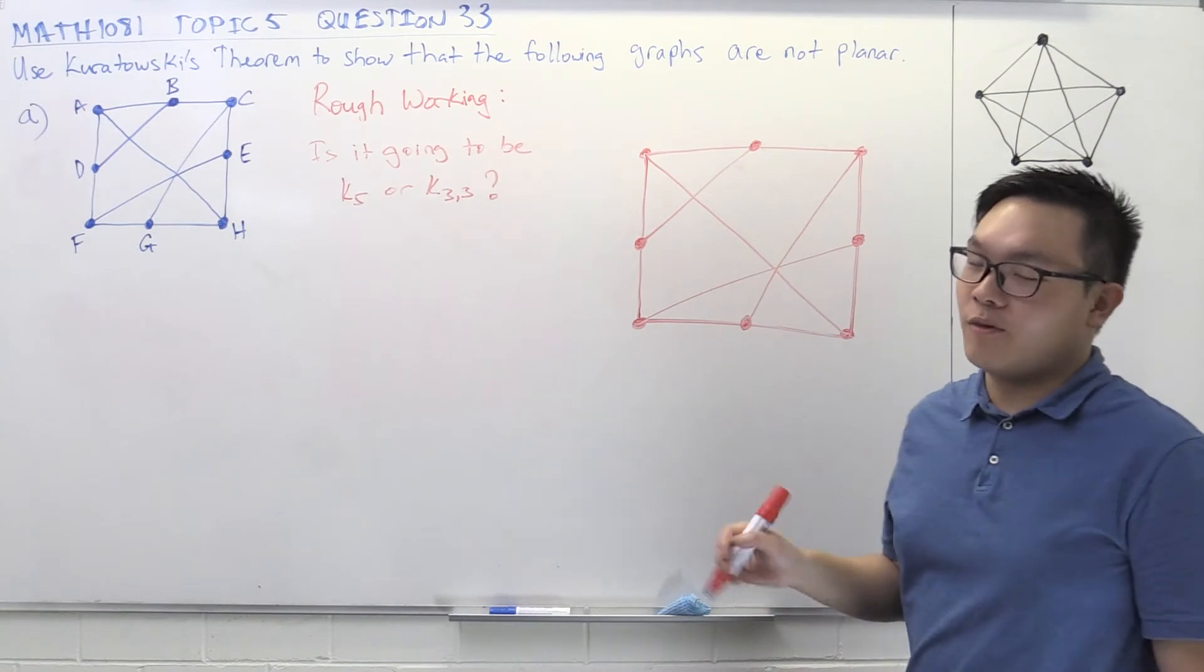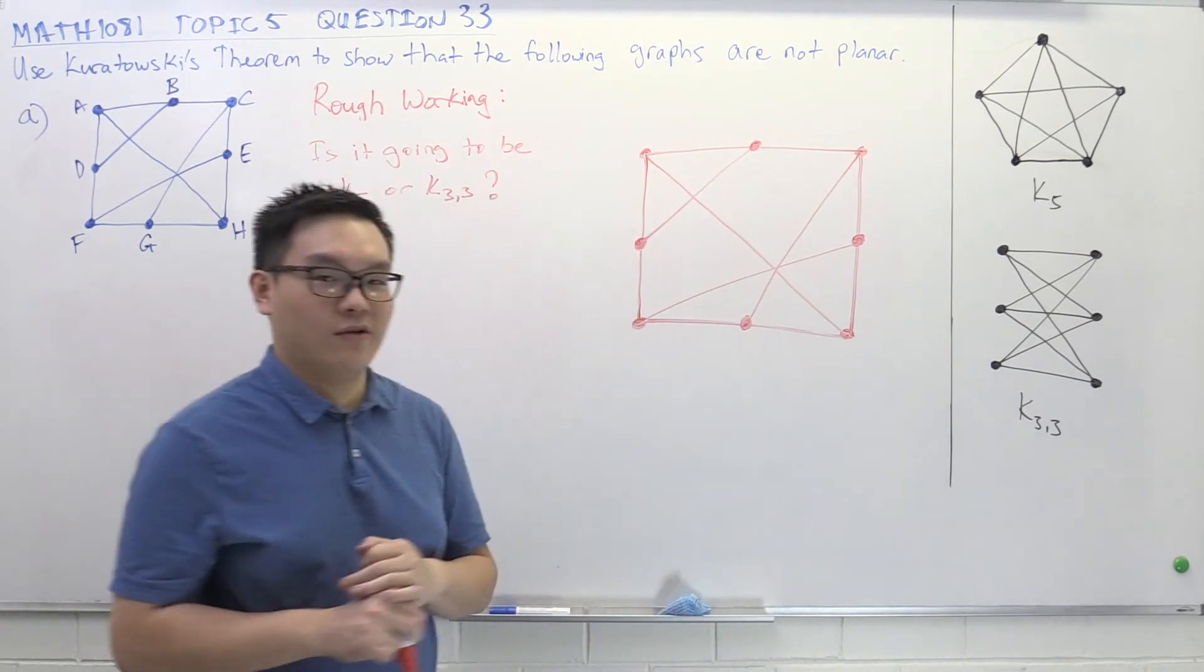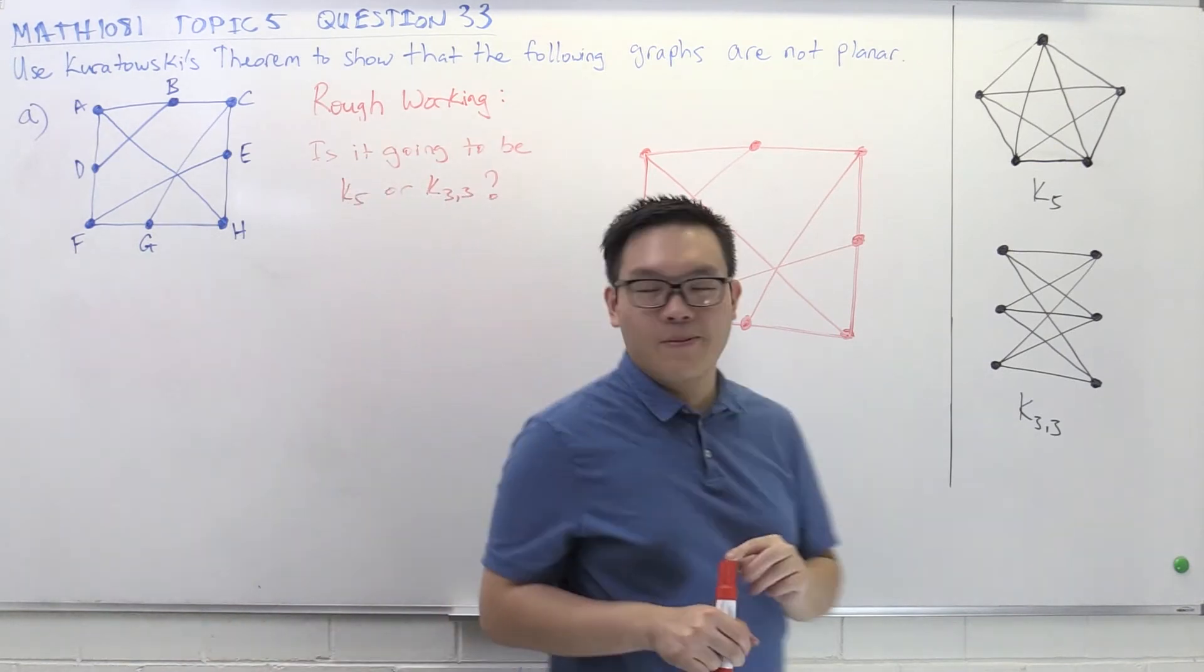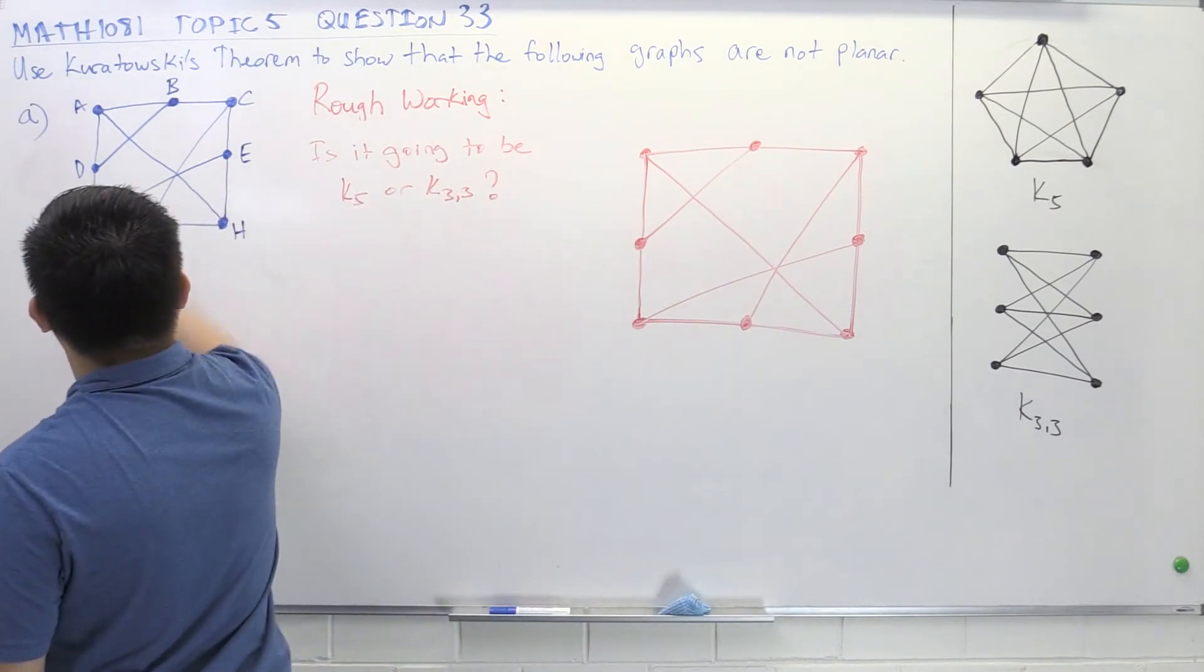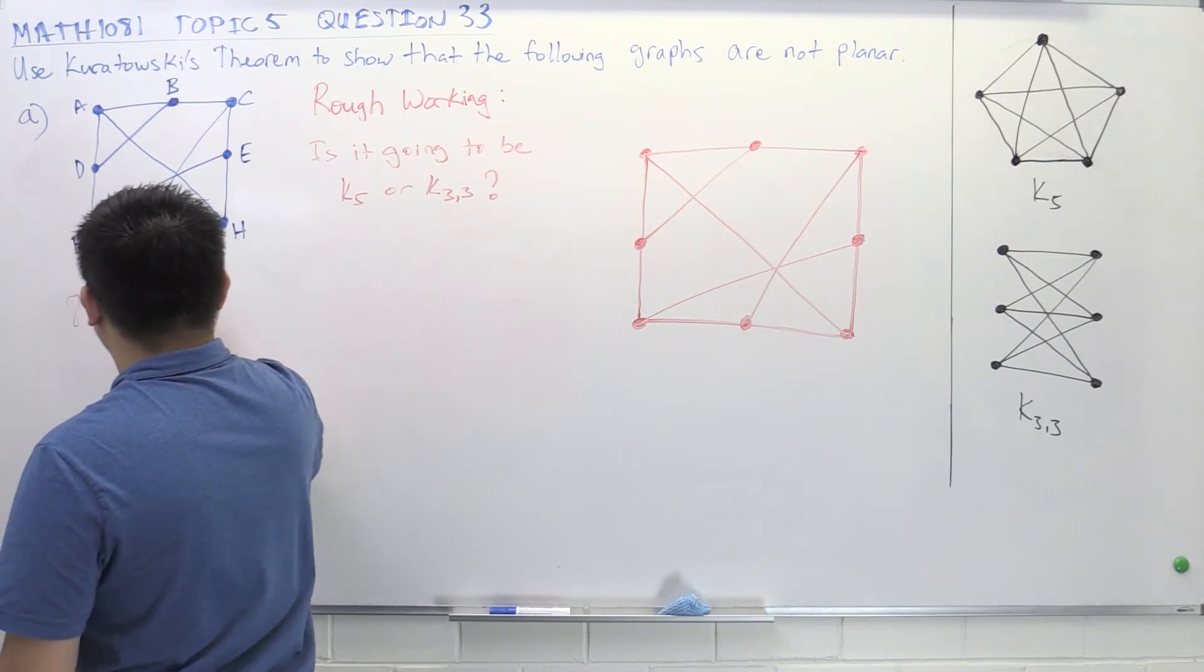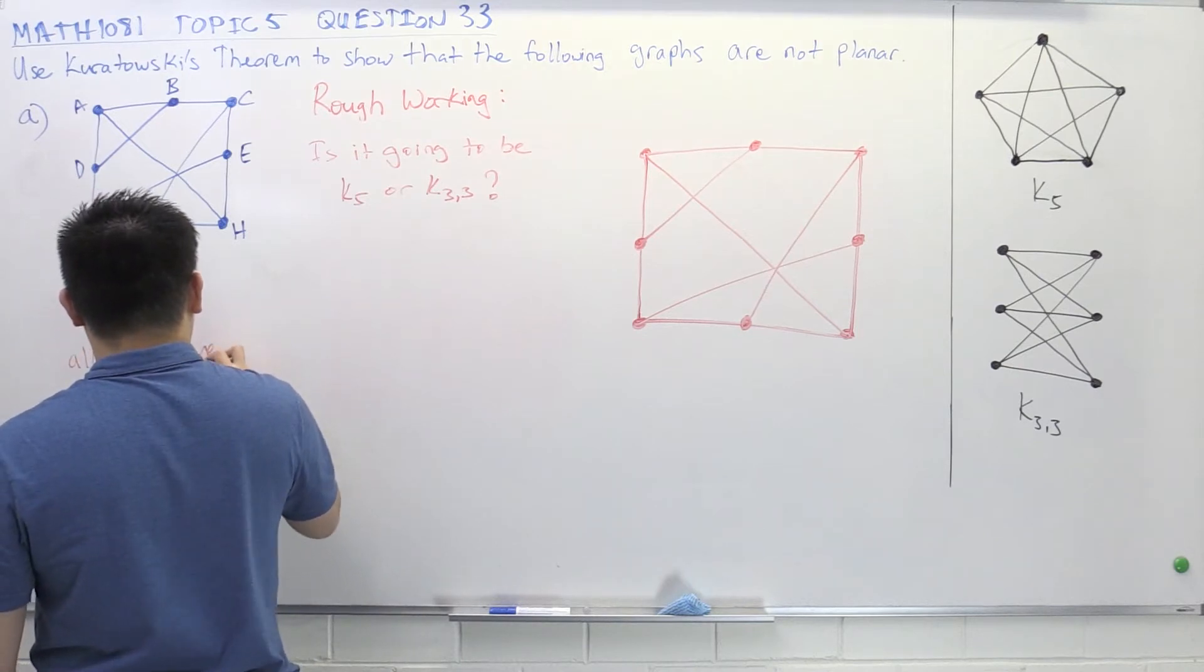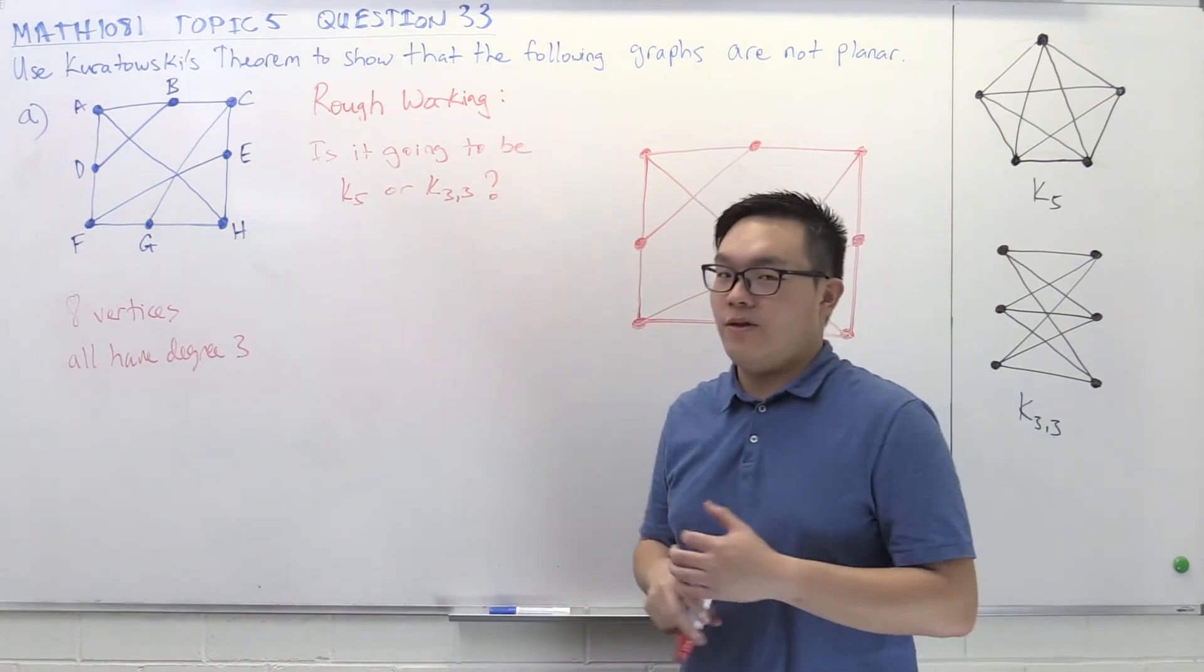Okay, so let's consider the properties of K5 and K33. K5 is the complete graph on 5 vertices, so each vertex has degree 4. And K33 is the complete bipartite graph on 3 vertices on one side and 3 vertices on the other. So all the vertices have degree 3. And let's compare that with the properties of the graph that we're working with. So this graph here has 1, 2, 3, 4, 5, 6, 7, 8 vertices. And interestingly, all of the vertices have degree 3.